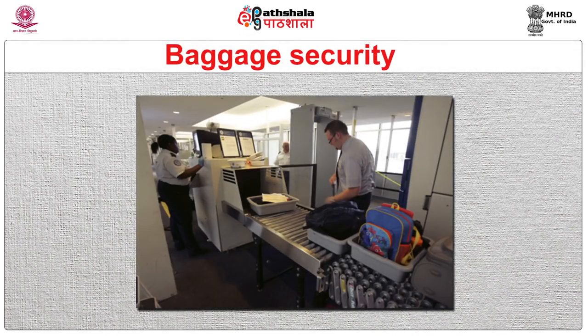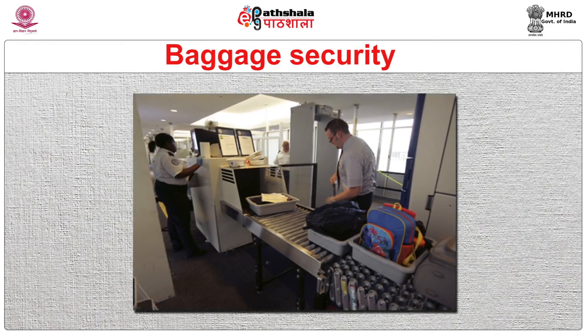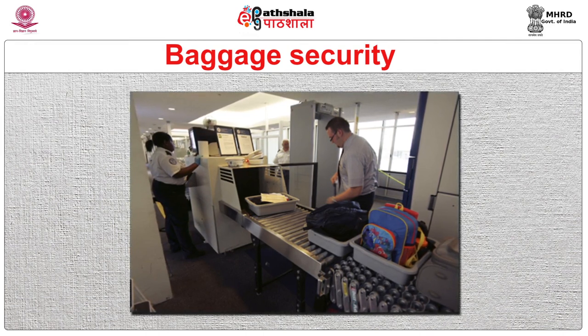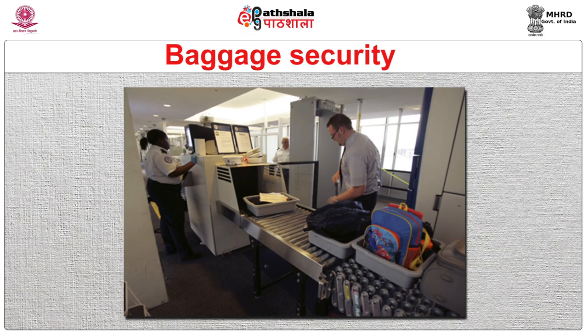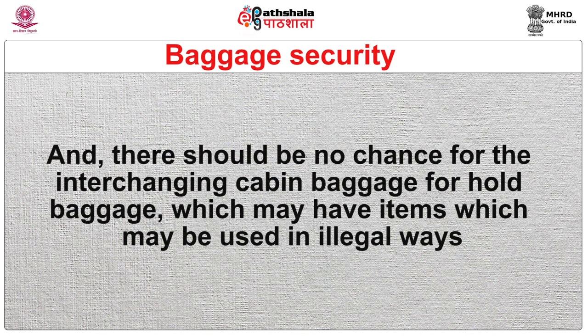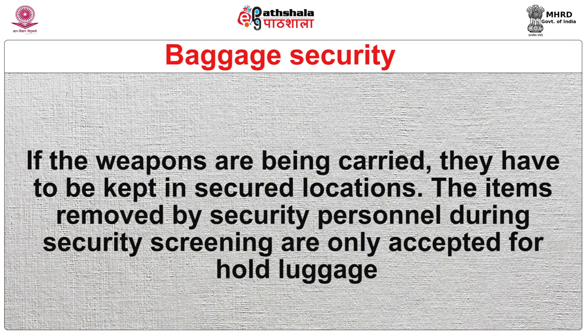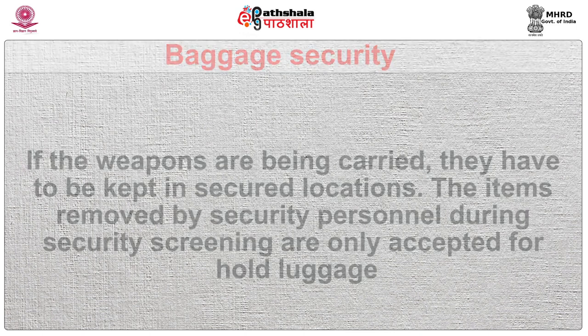For baggage security, IATA has issued strict instructions in the IATA Security Manual and Operating Airline Ground Operations Manuals. Whether it is the passengers or the cabin crew, they will have to get their hold baggage identified prior to loading, and there should be no chance for interchanging cabin baggage for hold baggage, which may have items which could be used in illegal ways. If weapons are being carried, they have to be kept in secured locations. Items removed by security personnel during screening are also accepted for hold luggage. When baggage has been collected from the hold during a transfer process, it should be considered as originating baggage.